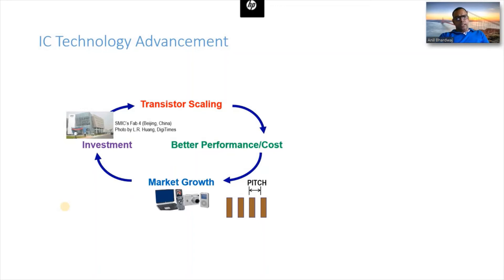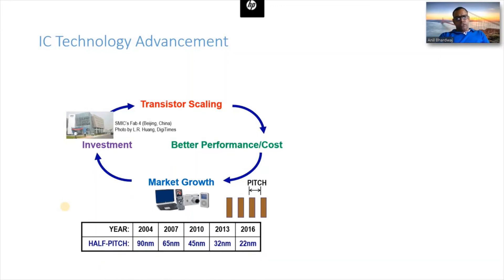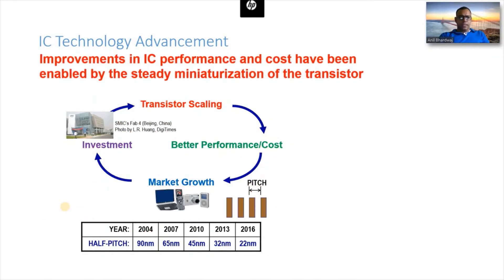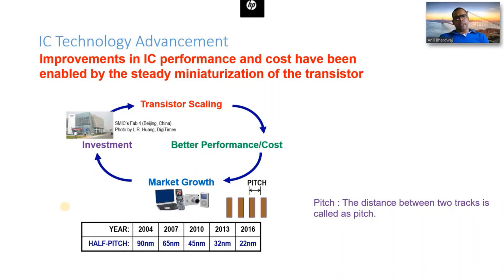If you look at the pitch size over the last 20 years, we can observe a significant change. The pitch size is the distance between two tracks — or interconnects — on an integrated circuit. In 2004 it was around 90 nanometers; right now it is 22 nanometers. It has considerably decreased day by day. The main focus right now is transistor scaling — we are actually scaling the transistor.